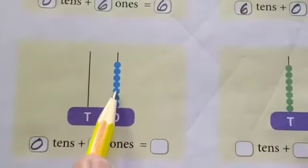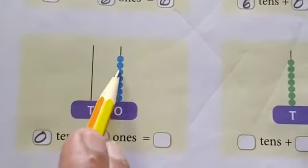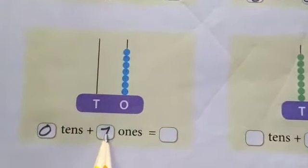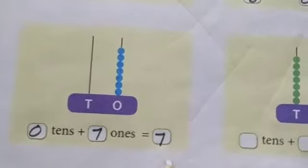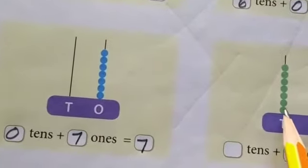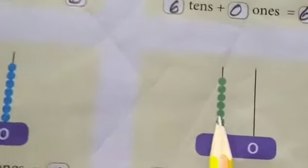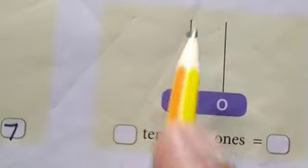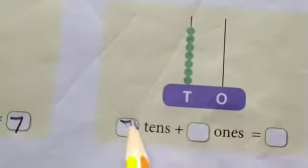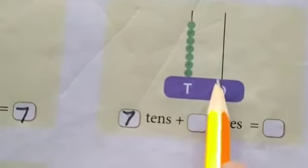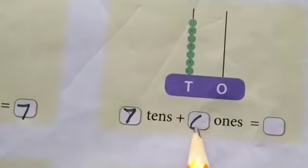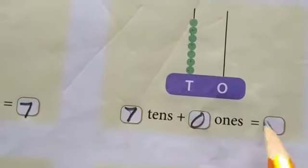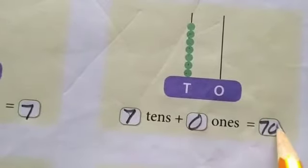Seven ones. Seven ones is equal to seven only. Here, seven tens and zero ones. Seven tens means seventy.